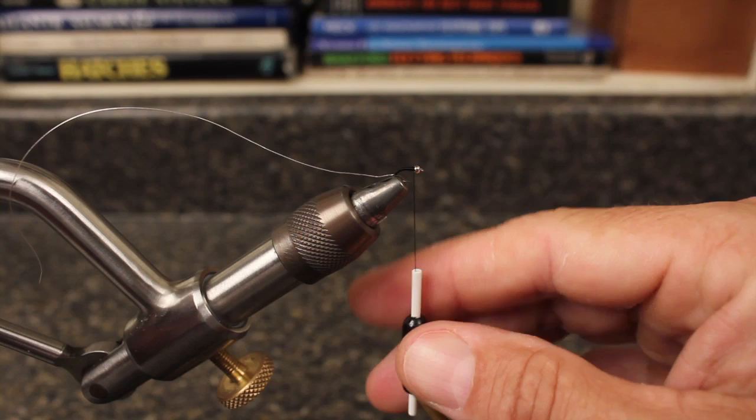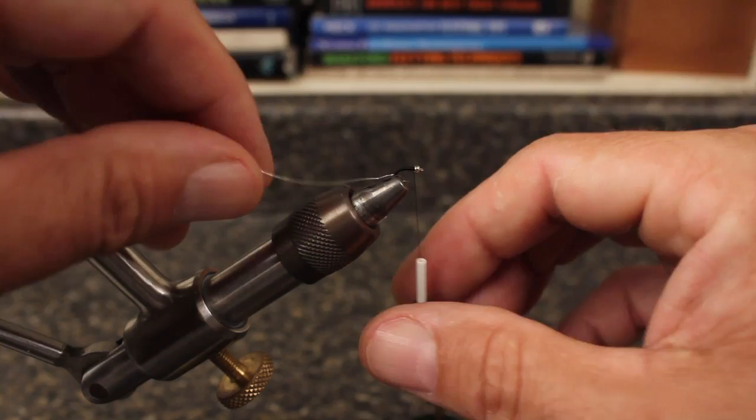When you get back to the bead, rotate your bobbin the other way clockwise to re-twist the thread, giving it a round, thin diameter.